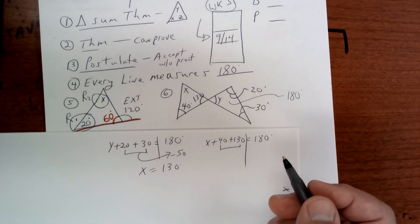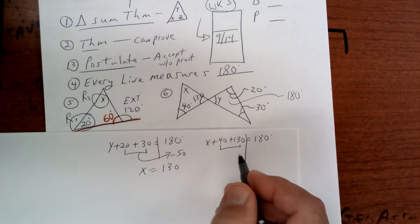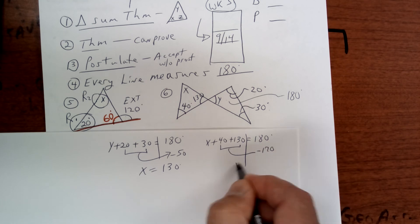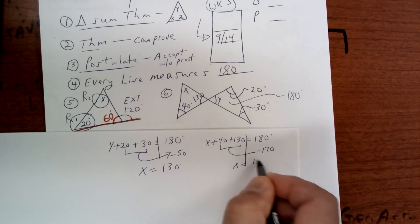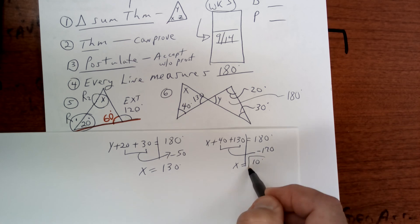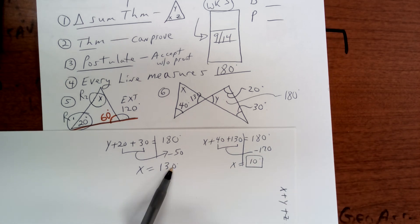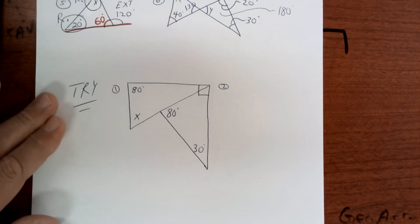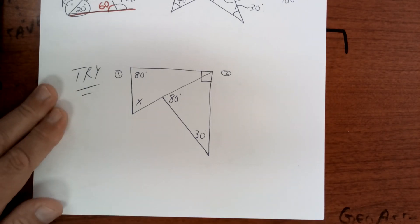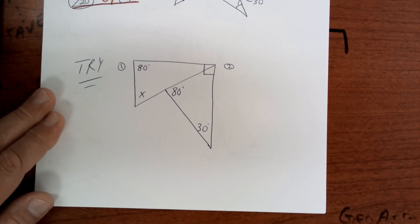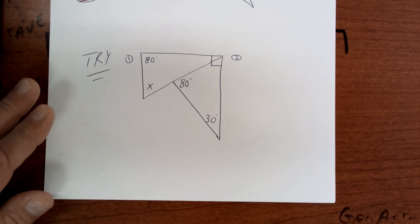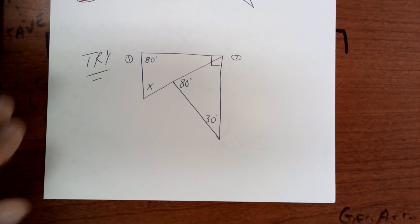Two equations for this one. This looks like 170, so subtract 170 and get x equals 10 degrees — that's your answer. Today I want to see your equations on a new sheet of paper. Copy this one down and try this one. Slide it up just a little bit more and try this problem right here.